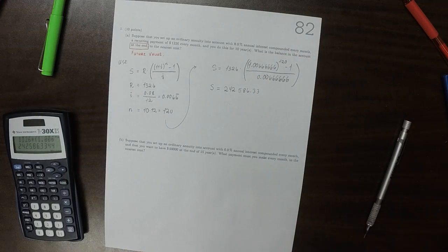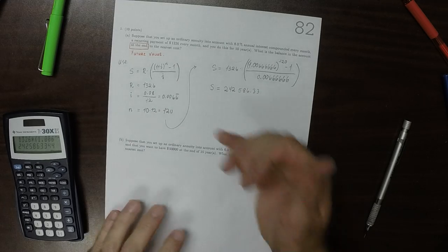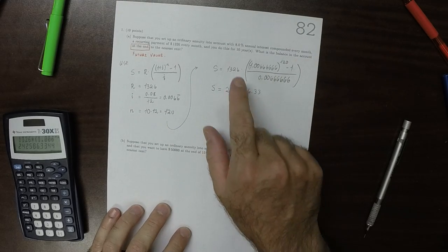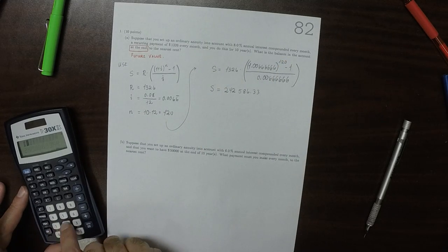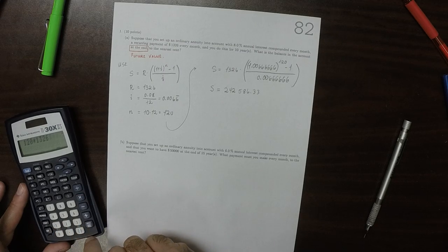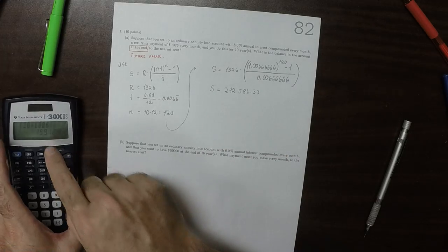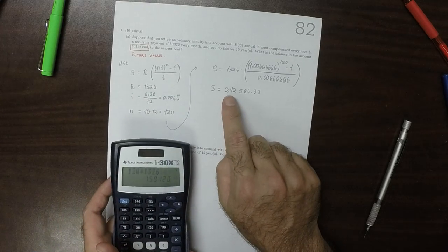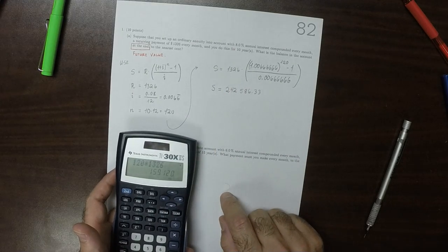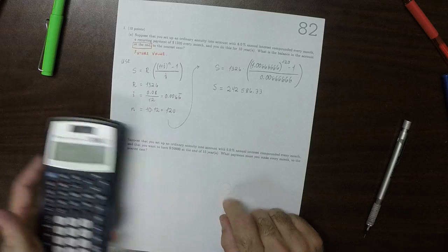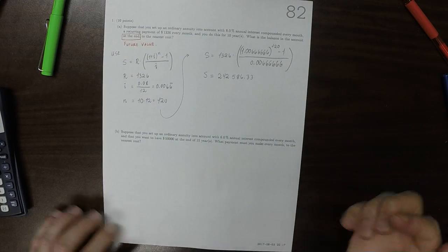So just as a quick check, does this seem like a reasonable value to me? Well, we made 120 payments of size 1,326, so just doing 120 times 1,326 that gives $160,000. And does that seem like a reasonable amount of interest? Well, 8% interest, yeah, that seems reasonable over the course of 10 years.